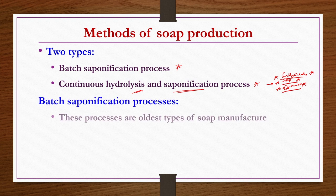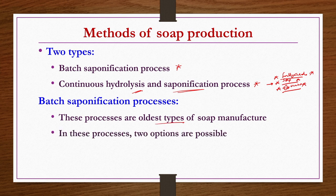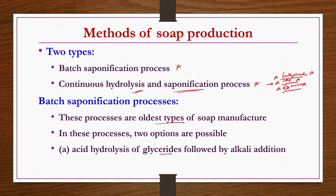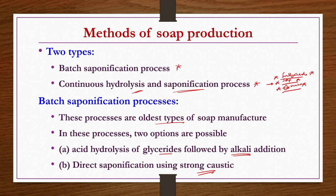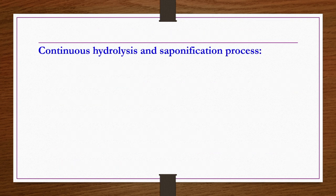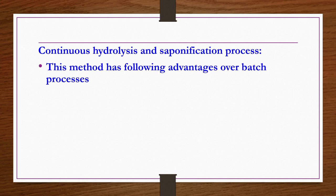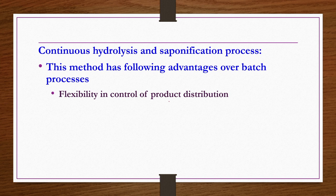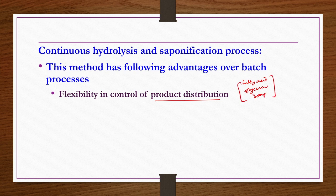Batch saponification processes are the oldest types of soap manufacture. Two options are available: first, acid hydrolysis of glycerides followed by alkali addition; second, direct saponification using strong caustic. However, nowadays continuous hydrolysis followed by saponification processes are mostly being installed. The continuous hydrolysis and saponification process has the following advantages over batch processes: flexibility in control of product distribution, higher glyceride yields, less color production during short-time hydrolysis step, and requires less space and manpower.